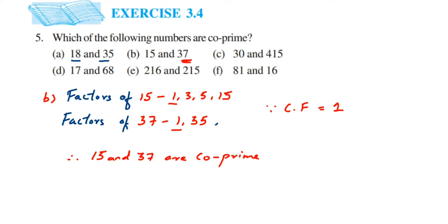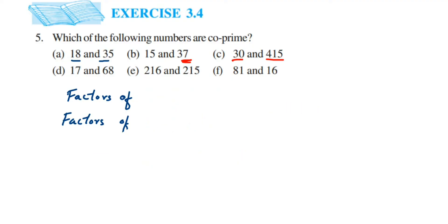Next we have 30 and 415. Definitely they are not co-prime, and I'll tell you why without finding all the factors. The number 30 ends with zero and 415 ends with 5, so both definitely go in the 5 table. Factors of 30: 1, 2, 3, 5, 6, 10, 15, 30. For 415, I can note it goes in 1 and in the 5 table because any number ending with 5 or 0 goes in the 5 table.